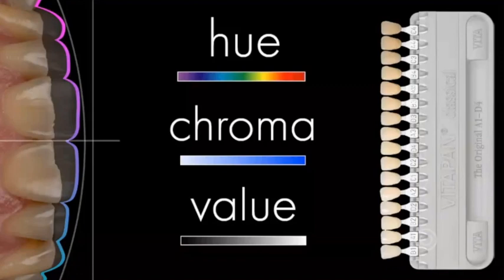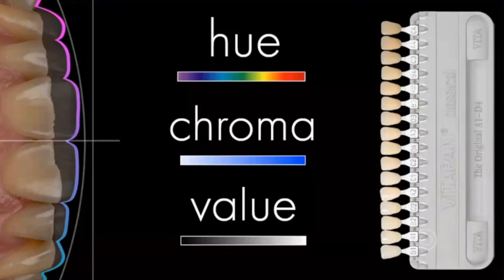With a full master composite kit, every six months you go through it and 50% of the shades have gone out of date because you haven't used them — the B4s, A4s — you get 15 compules out of date. It's not cost-effective to have such a massive shade selection. By tooth whitening patients first, you're bringing everybody to the lower end of the shade spectrum — a BL4, B1, or A1. It doesn't matter if they come in as an A4 or A2; whiten them and everybody becomes the same.